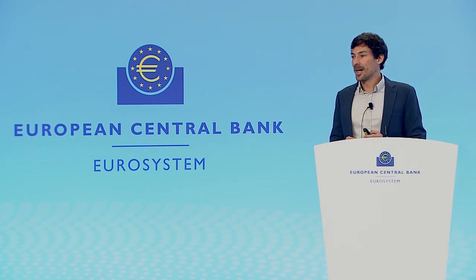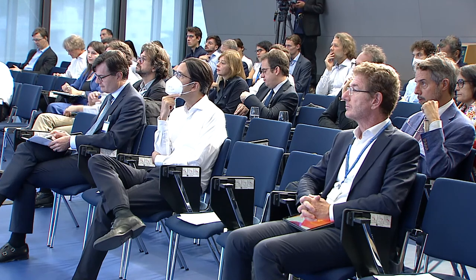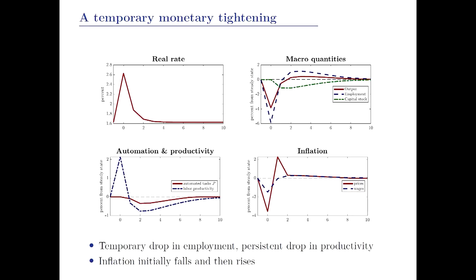Let me show the dynamics. Consider a temporary monetary tightening: the central bank engineers a temporary increase in the real interest rate, which then gradually returns to its initial value. In the short run, the response is perfectly conventional: the higher interest rate depresses aggregate demand, generating a recession with output dropping. In the short run capital is predetermined, so the drop in demand is accommodated by a drop in employment — firms fire workers. As unemployment increases, wage inflation drops, and inflation drops as well.